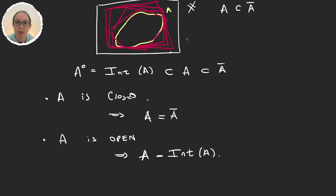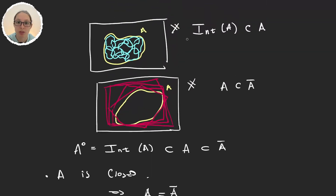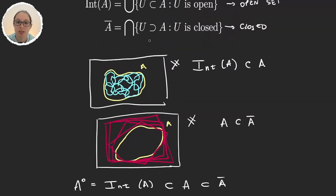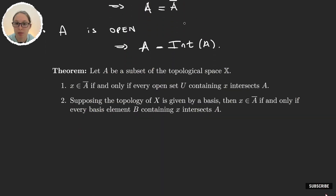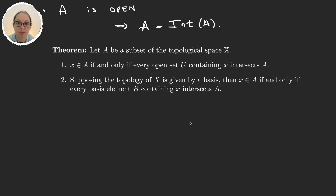Now let's see a very important theorem that will be extremely useful. It will be an equivalent definition of closure — the one we are mostly going to use, not so much the definition as an intersection of closed sets. The theorem says: we have A a subset of a topological space X (with topology tau X), and we say that an element of the space is in the closure of A if and only if...